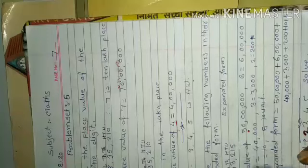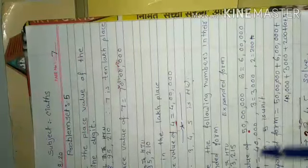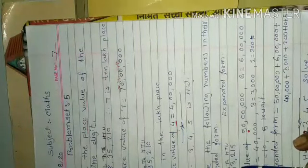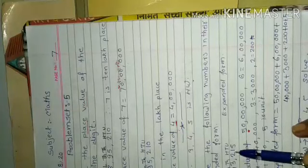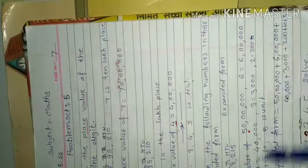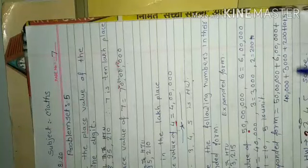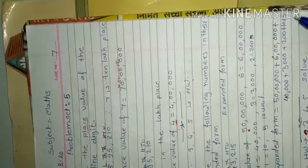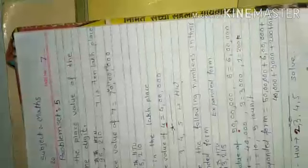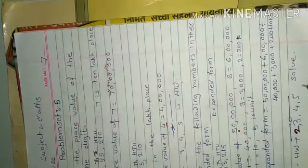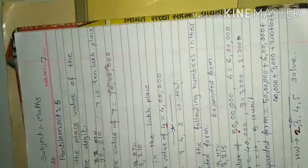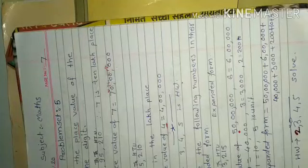This is how you add the zeros: 1, 2, 3, 4, 5, 6 zeros for lakh place. In this way, you can solve questions number 2, 3, 4, 5 in the same manner. Now let's look at question number 3.